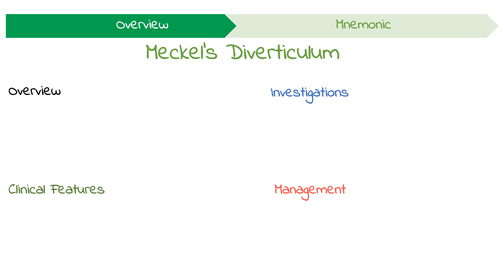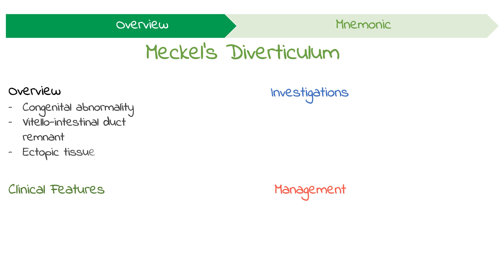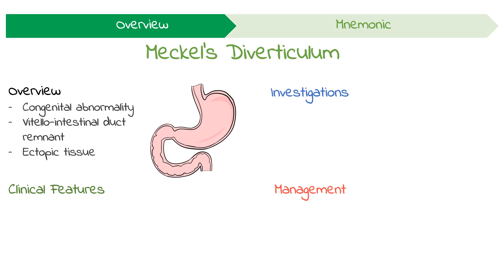Now this is the most common congenital abnormality of the gastrointestinal tract. It represents the embryological remnant of the vitello-intestinal duct which joined the fetal midgut and the yolk sac. It can contain ectopic tissues like gastric and pancreatic mucosa. Although it's mostly asymptomatic, this feature means that acid-secreting gastric cells cause ulceration, making it an important differential for painless rectal bleeding.